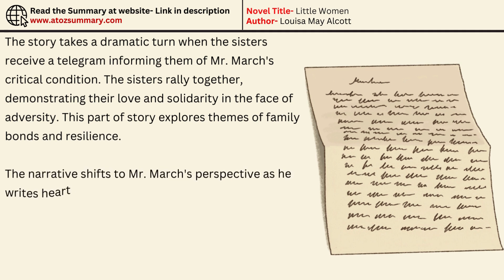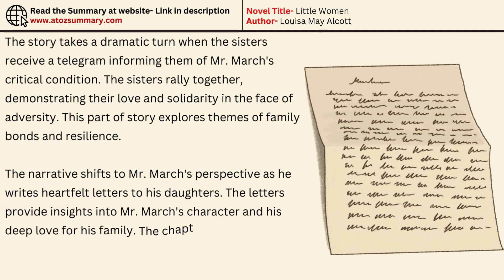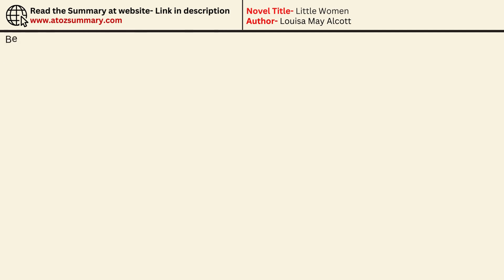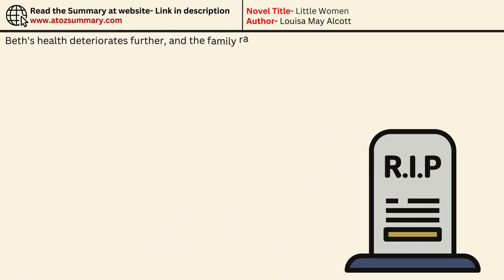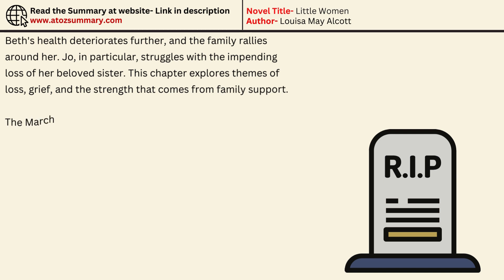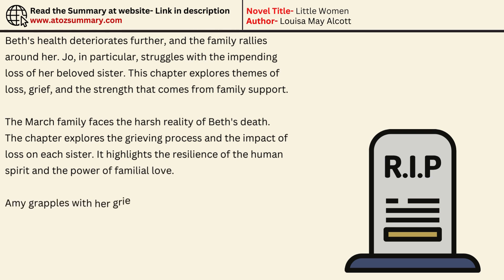The narrative shifts to Mr. March's perspective as he writes heartfelt letters to his daughters. The letters provide insights into Mr. March's character and his deep love for his family, adding emotional depth to the story and emphasizing the enduring connection between father and daughters. Beth's health deteriorates further, and the family rallies around her. Jo, in particular, struggles with the impending loss of her beloved sister. This chapter explores themes of loss, grief, and the strength that comes from family support. The March family then faces the harsh reality of Beth's death, and the chapter highlights the resilience of the human spirit and the power of familial love.